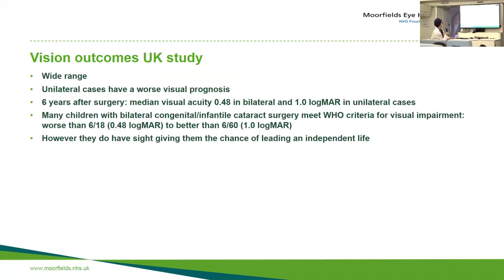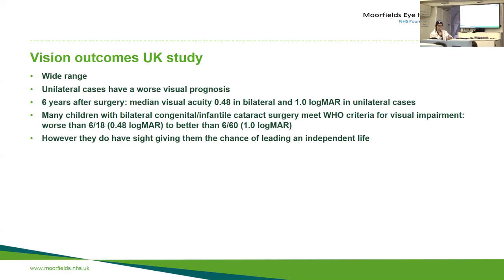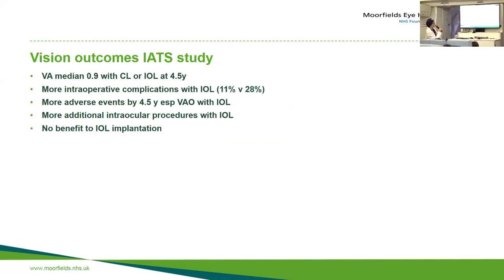Parents will want to know the likely vision outcome. Average outcomes after surgery are about 50 percent of normal for bilateral cases and about 10 percent of normal for uniocular cataracts six years after surgery — 0.48 logMAR. Many of these children will meet criteria for sight impairment, but at least they've had a chance at sight. The American IATS study reported a median acuity of 0.9 logMAR, approximately 20/160.